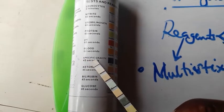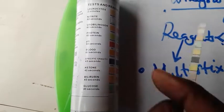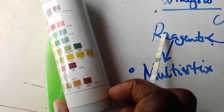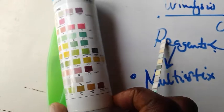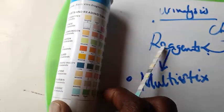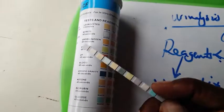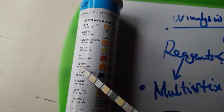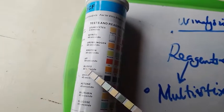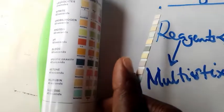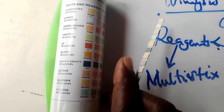If you find that the specific gravity is high above the readings, which is maybe say 1030, you may find that meaning this patient may be diabetic because the concentration of urine has gone up. When you go to blood, you find blood in urine, you may suspect that this patient has got schistosomiasis or this patient is bleeding in the urinary tract.